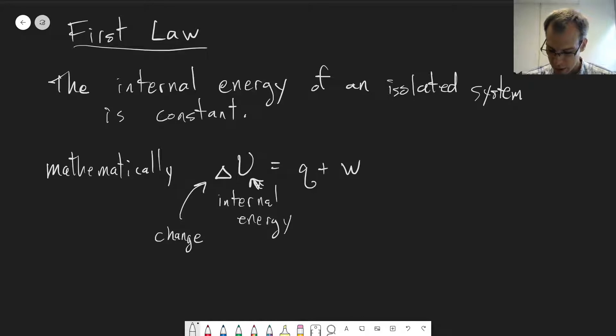Or, that's the integrated form. We can also write a differential form, where we're looking at a minuscule, infinitesimal change instead, and say dU equals dQ plus dW. And we'll get into why these Ds are written differently for the U versus Q and W.